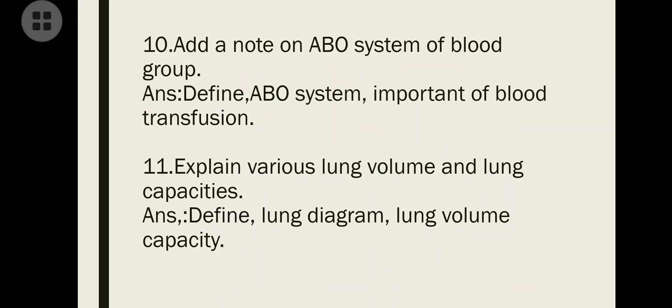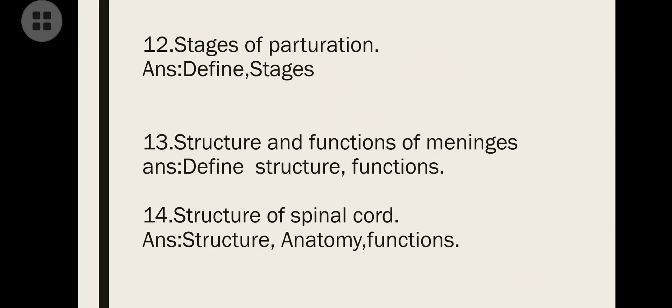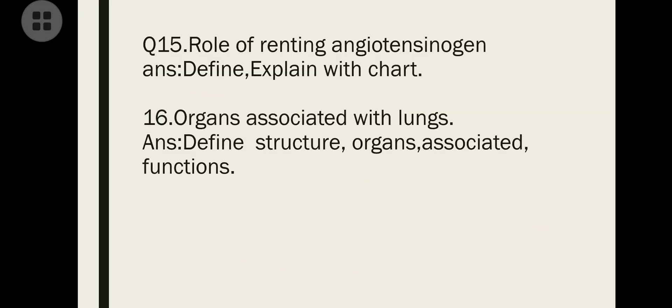Add a note on ABO system of blood grouping - same as in first semester. Various lung volumes and lung capacities - draw lung diagram and write lung volumes and capacities. Stages of parturition - define what is parturition, then write the three stages and explain those stages. Structure and function of meninges - define the structure, write the anatomy and functions of each layer. Three layers are there, write separate functions. Structure of spinal cord - write structure, anatomy, and physiology.